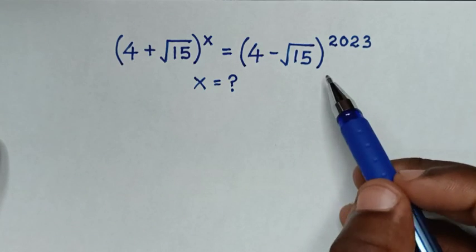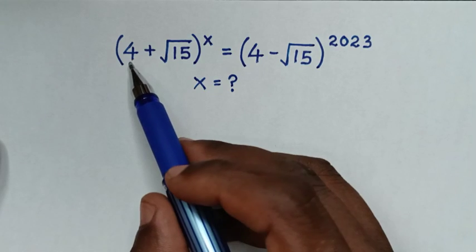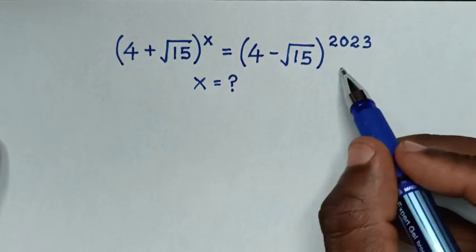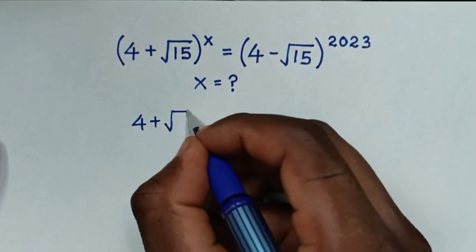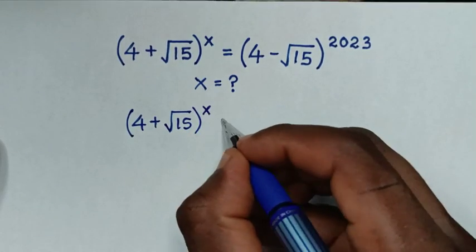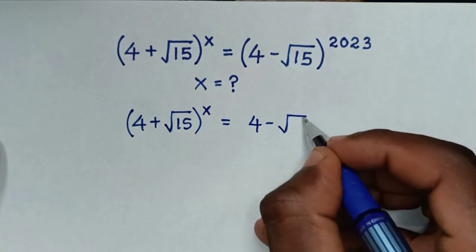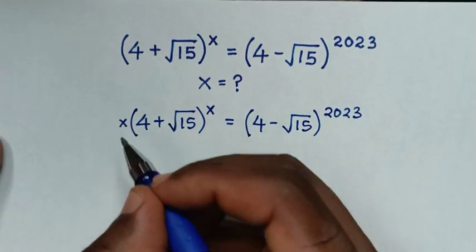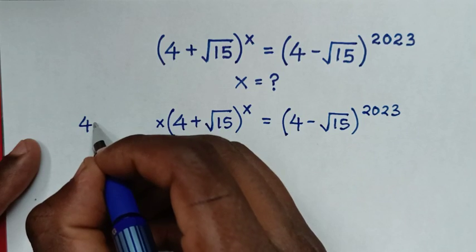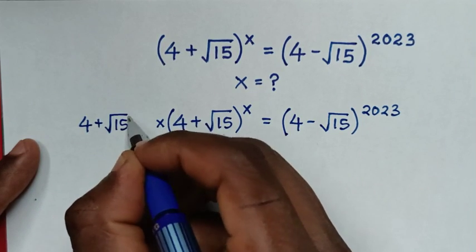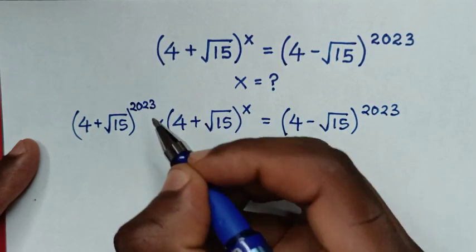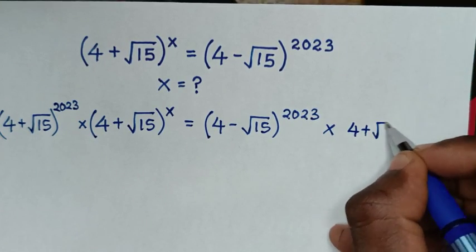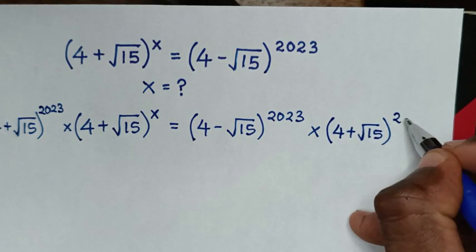From this problem, we start by multiplying both sides with the exponent with base (4 plus square root of 15) to the power of 2023. So we multiply with the same exponent, (4 plus square root of 15) to the power of 2023, on both sides.